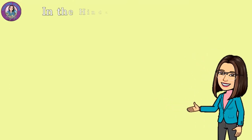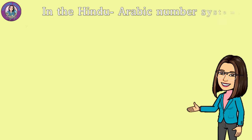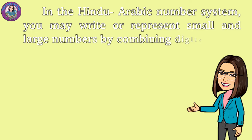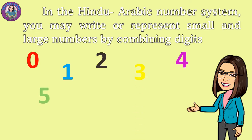In the Hindu-Arabic number system, you may write or represent small and large numbers by combining the digits 0, 1, 2, 3, 4, 5, 6, 7, 8, and 9.